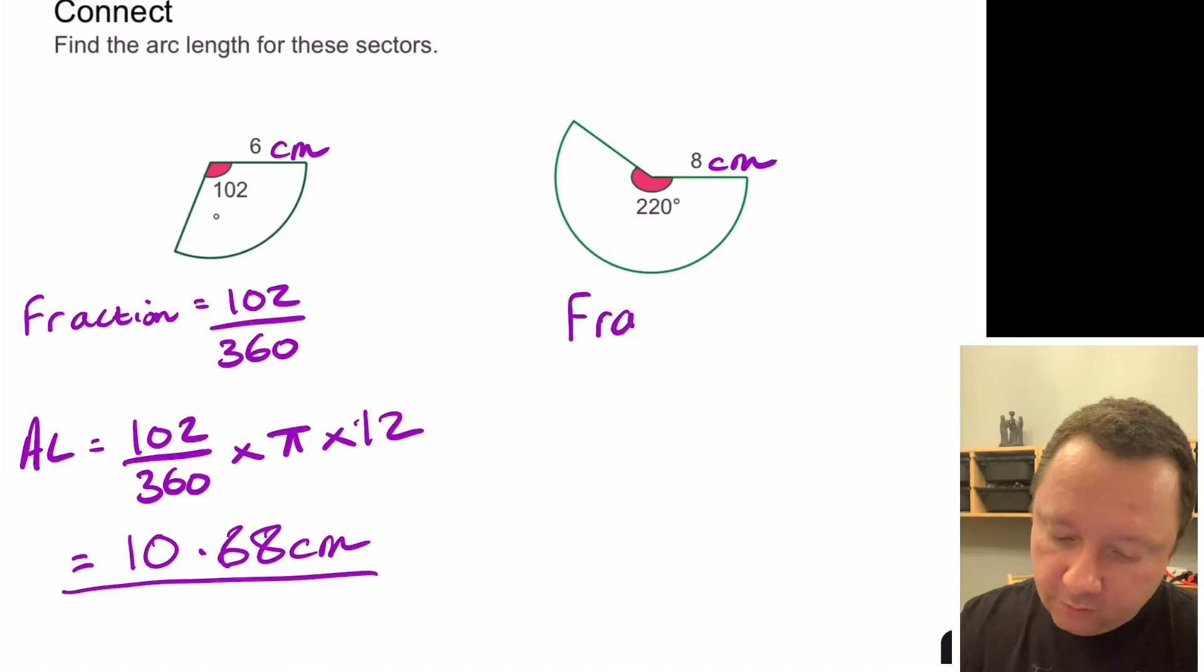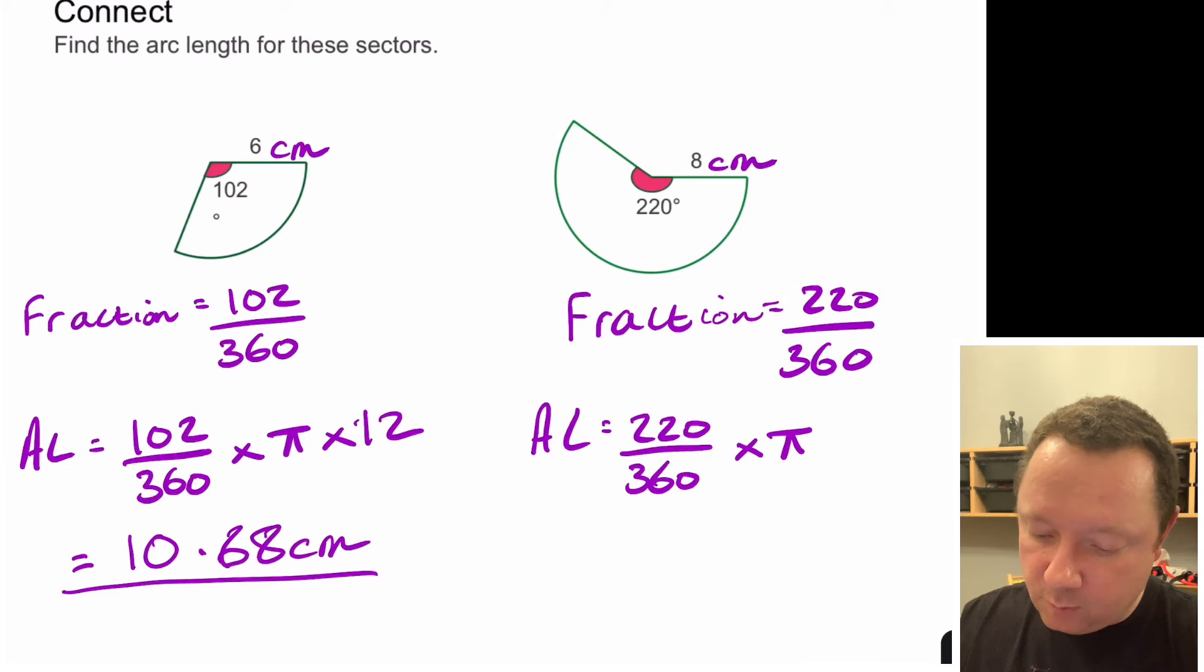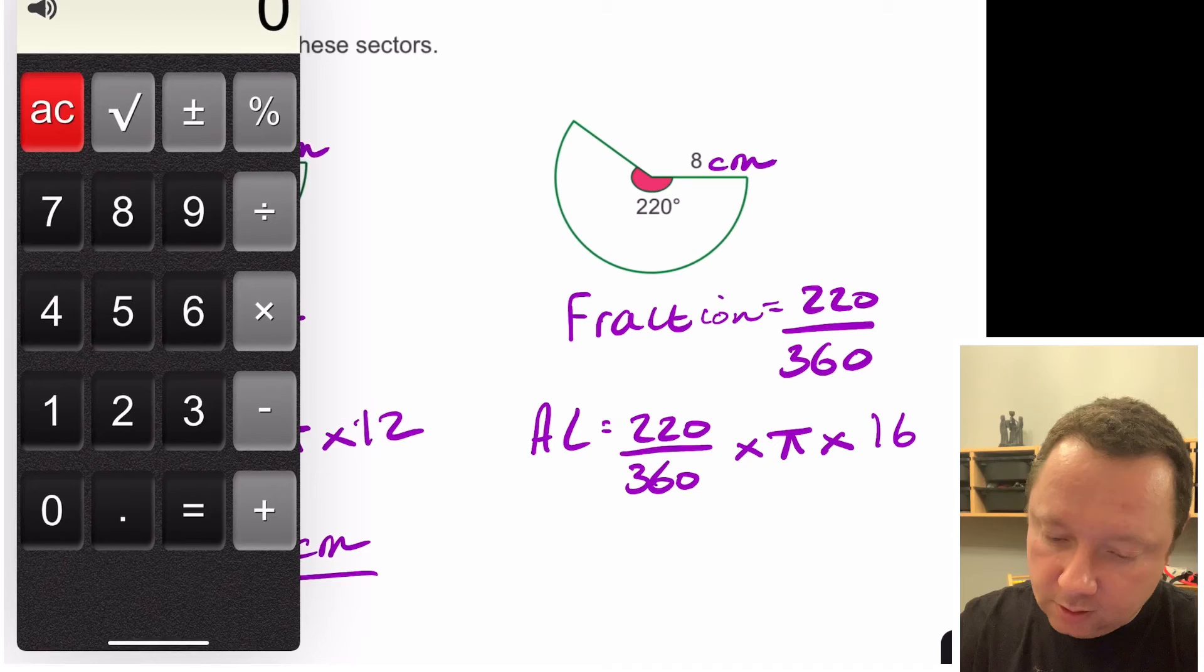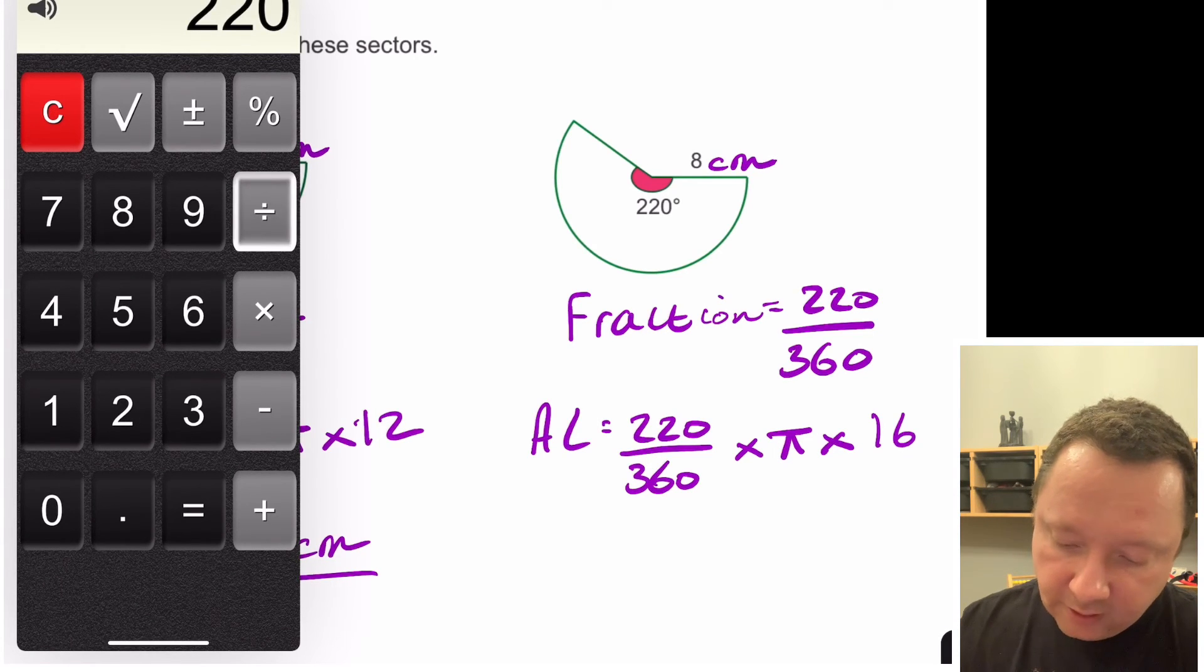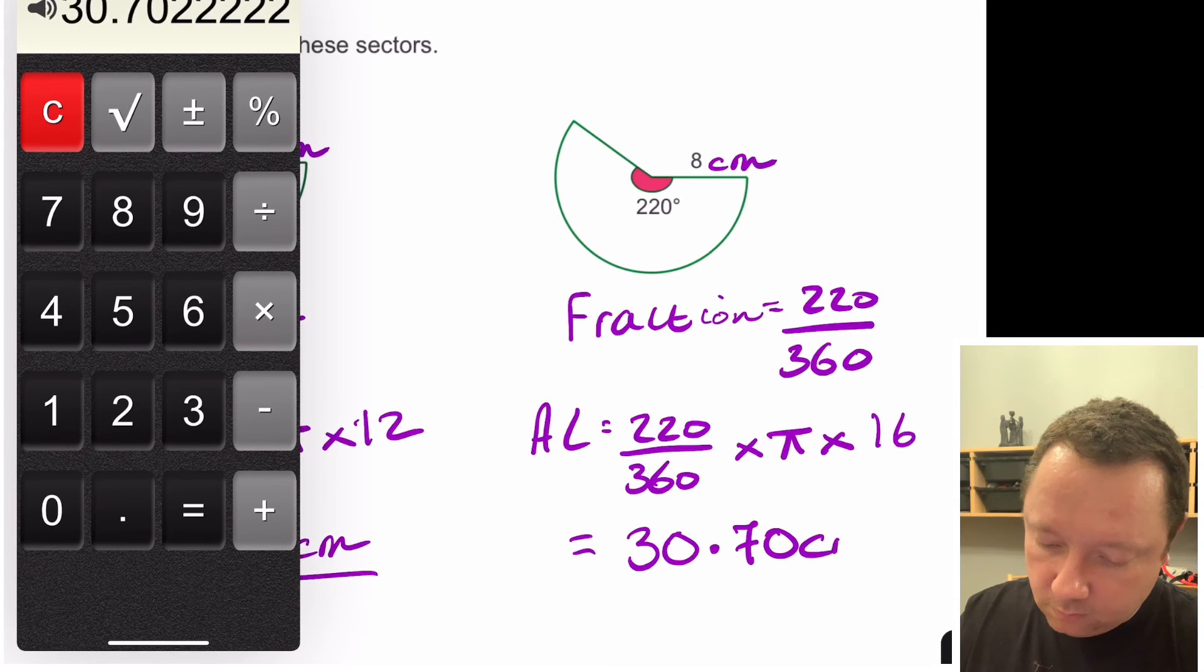So example two, let's look at our fraction. Our fraction is going to be 220 out of 360. Now if we're going to leave our answer in terms of pi we would simplify it but if we're not there's really no point so we'll just go straight into the arc length which is 220 out of 360 times pi times the diameter which in this case would be 16, double 8. I just get my calculator. So we've got 220 divided by 360 times pi times 16 and we get a nice answer of 30.70 centimetres.